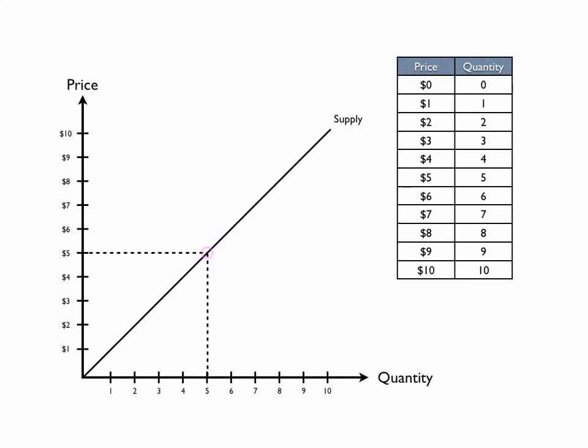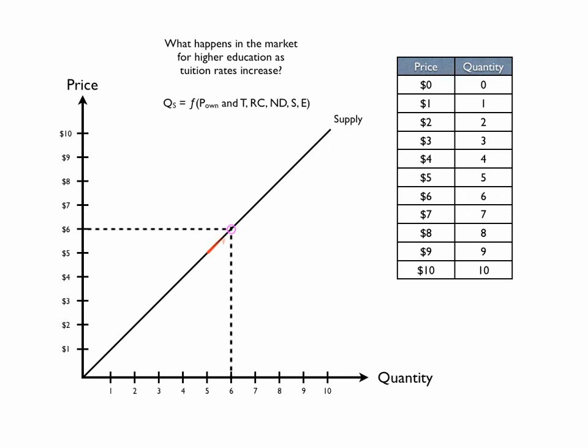What happens in the market for higher education when tuition rates increase? The quantity supplied of college is equal to some function of tuition, holding other things constant. None of those other things changed — what changed was the price itself. That's going to be movement along our supply curve, not a shift of it. An increase in the price of college tuition causes an increase in the quantity supplied of higher education. There would be no change in the supply curve — simply movement along the supply curve, because in this model we're determining how much more education would be produced at higher prices.